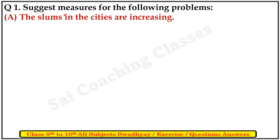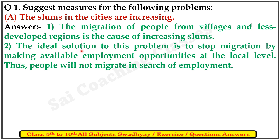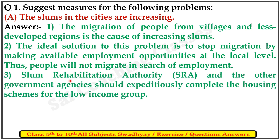The first question: suggest measures for the following problem. A: The slums in the cities are increasing. The migration of people from villages and less developed regions is the cause of increasing slums. The ideal solution is to stop migration by making adequate employment opportunity available at the local level, so people will not migrate in search of employment. Third, the Slum Rehabilitation Authority and other government agencies should expeditiously complete housing schemes for the low-income group.